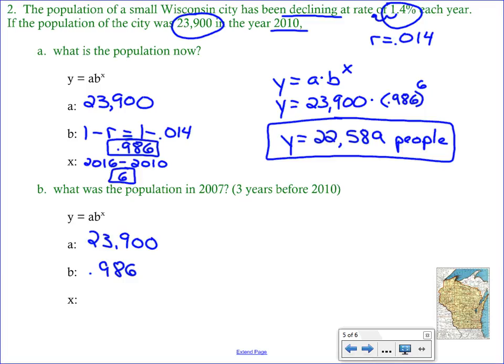Now, remember our starting year was 2010. If we're looking for three years before 2010, we need to subtract, just like we did in the previous example, but we're going to end up with a negative exponent. An easy way to remember that is, if you're going back in time, it makes sense to use a negative. So we're going to do the same thing we've been doing. We're going to plug this into our basic formula: y equals 23,900 in parentheses 0.986, and then raise that to the negative third power.